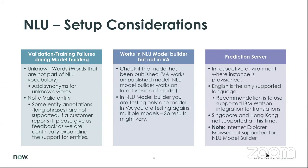If you come across an issue where it's working in the NLU model builder but not in the virtual agent, make sure the model has been published. You can train and test your model without it being published, but if you forget to publish it you won't be able to consume it in your conversation. In the NLU model builder you're testing one model, but in VA you're testing against multiple models, so results may vary. The prediction server must be in the same environment where your instance is provisioned — if your instance is in a certain data center, your prediction server should point there as well. This is a system property — the prediction server URL — so that's a good place to troubleshoot.